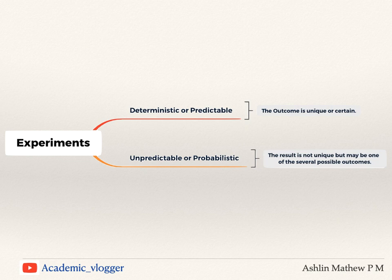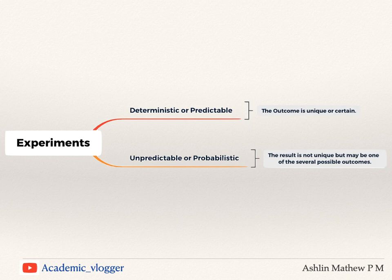Now if I have the same conditions and I am repeating the experiment a number of times in a homogeneous or similar situation where there are no external factors, and if the result is not unique but may be one of several possible outcomes, then such an experiment is said to be unpredictable or probabilistic.